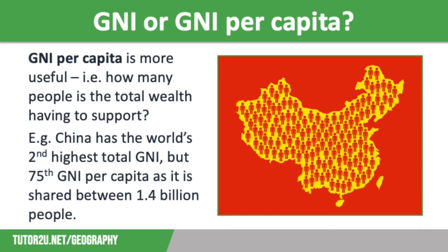Based on 2023 rankings, the top five countries in the world for total GNI were: first place, the United States; second, China; third, Japan; fourth, Germany; and fifth, India. So these are the countries with the greatest total wealth.